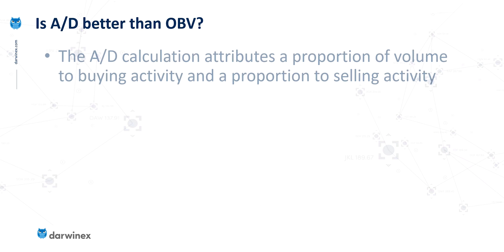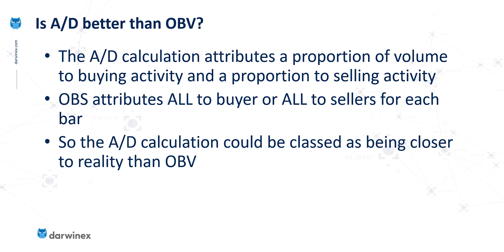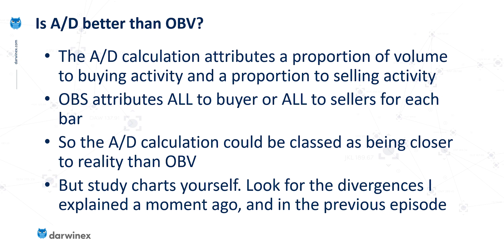So does this mean that AD is better than on-balance volume? The calculation seems to make a lot more sense and should give us more accurate results, and so the volume flow from it should be closer to reality than with OBV. What I would recommend is that you study charts for yourself using both of these indicators, and look for those divergences — specifically look for when each of those indicators gives you a different signal.